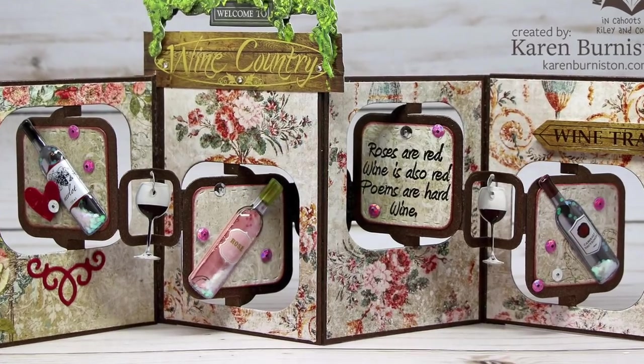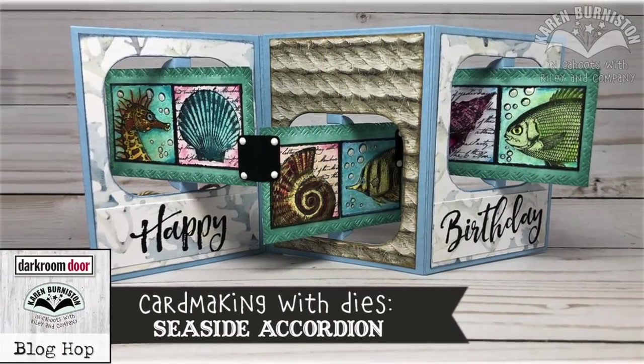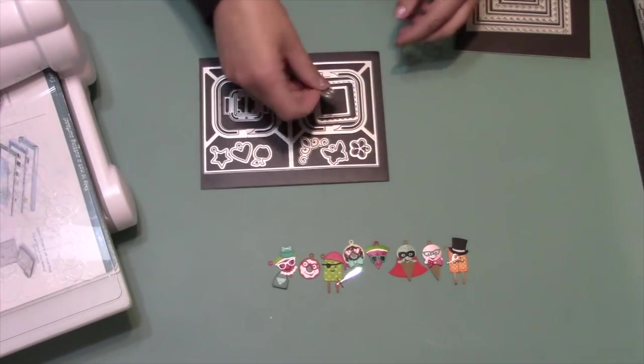Then you can also stagger that accordion but do it with rectangles instead of squares, so just lots of versatility with this die set. Another reason it goes great with all of our add-on charm sets is because of this die here.